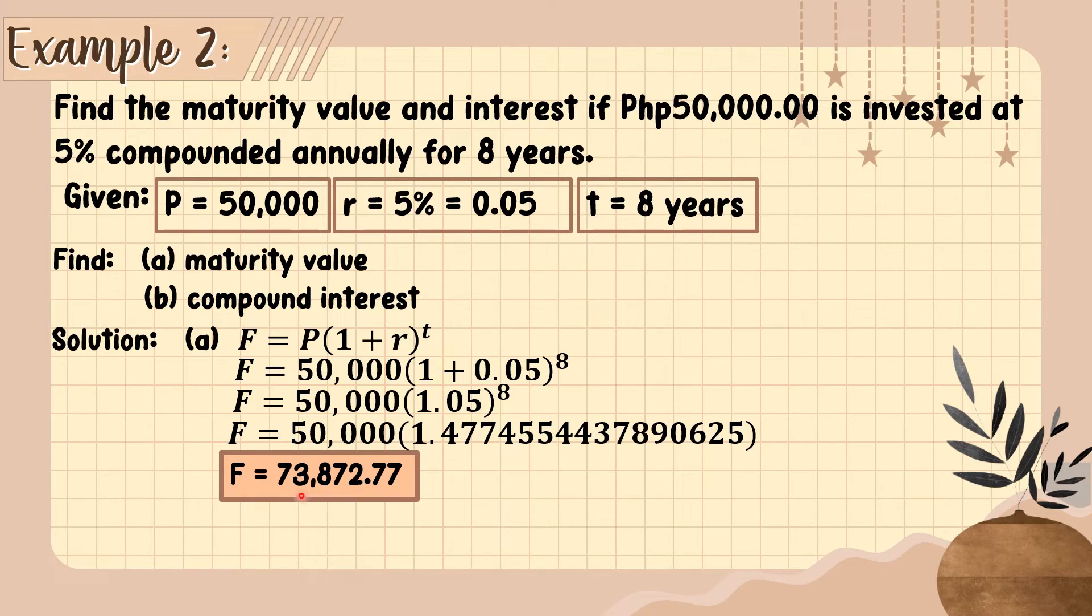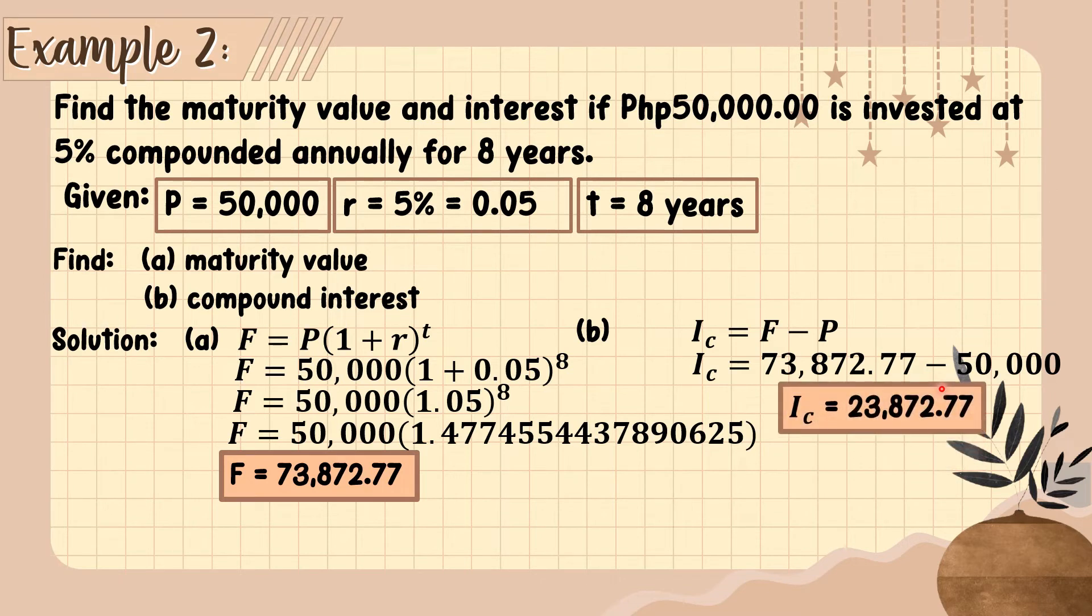Now let's find the compound interest following the formula I sub C equals F minus P. The future value 73,872.77 minus the principal which is 50,000. Therefore, the compound interest is 23,872.77.